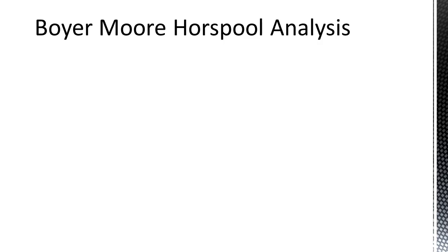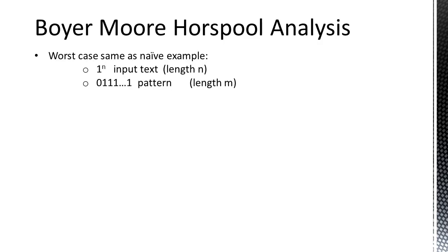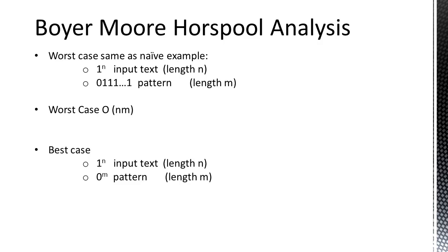Now let's analyse this algorithm. The worst case is actually the same as the naive example, and occurs when the input text is a string of 1s and the pattern is a single 0 followed by a string of 1s, where the pattern is shorter than the text. The algorithm will match all the 1s, then mismatch with the 0, and the value for 1 in the bad match table will be 1. So the process will be the same as the naive example, giving it a worst case time complexity of O(N·M). The best case occurs when the input text contains no characters from the pattern — the pattern shifts forward M spaces each time, giving O(N/M) complexity. The average case is in order of N divided by the length of the alphabet, and in practice this algorithm runs a lot faster than the naive approach.